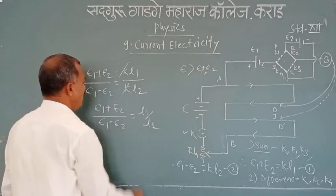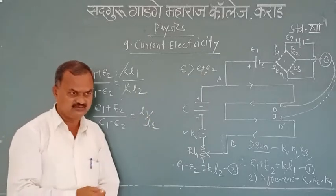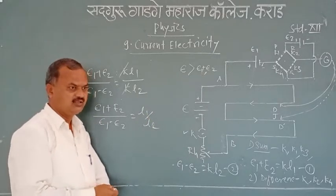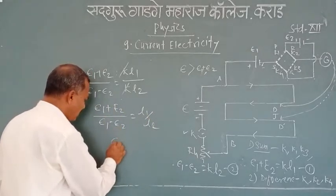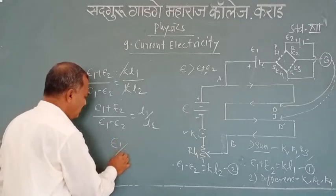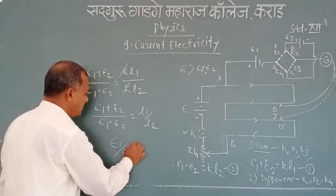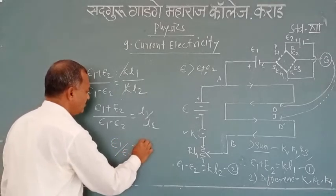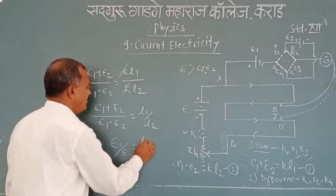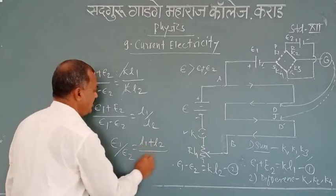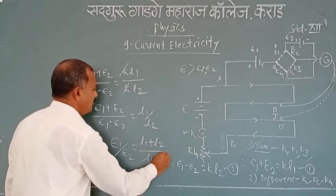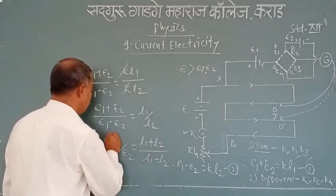After solving the two equations, we obtain the final formula: E1 divided by E2 equals L1 plus L2 divided by L1 minus L2.